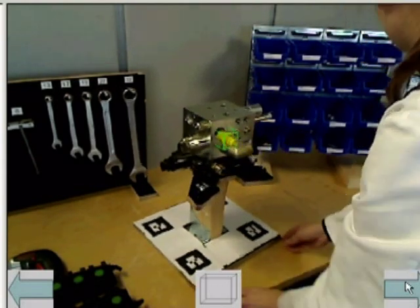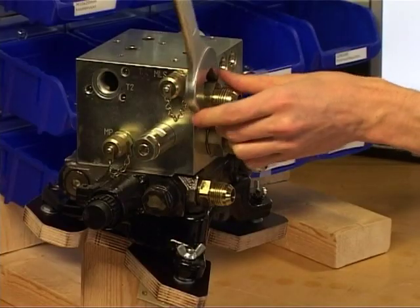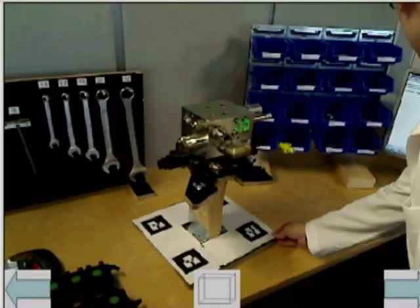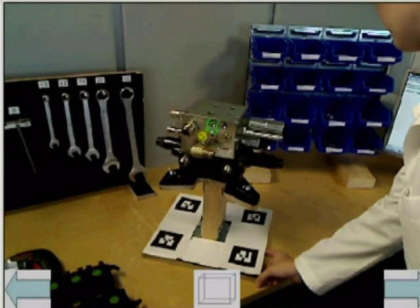This demonstrator uses marker-based augmented reality, where square region markers are found in the video stream. For each square, the pattern inside the square is captured and matched to a pre-trained pattern template.